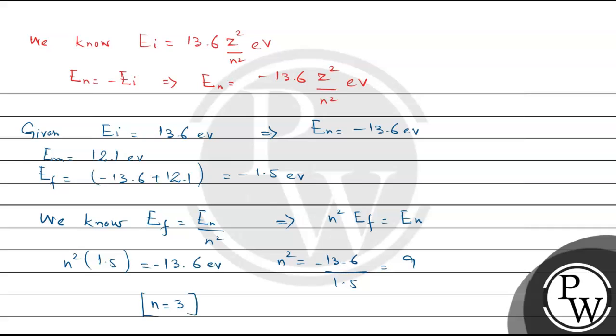Now number of spectral lines = n(n-1)/2 = 3(3-1)/2 = 3.